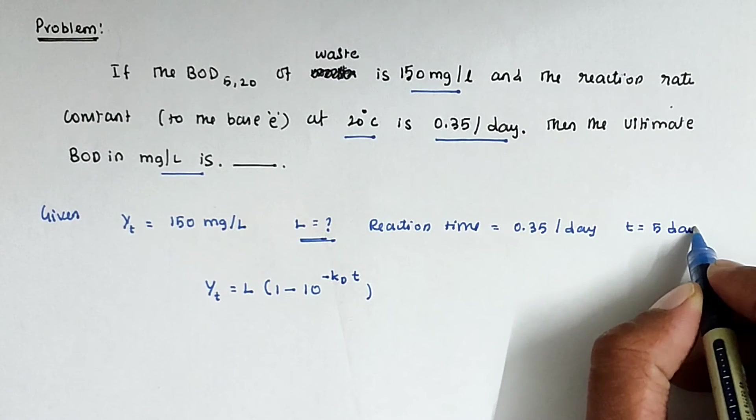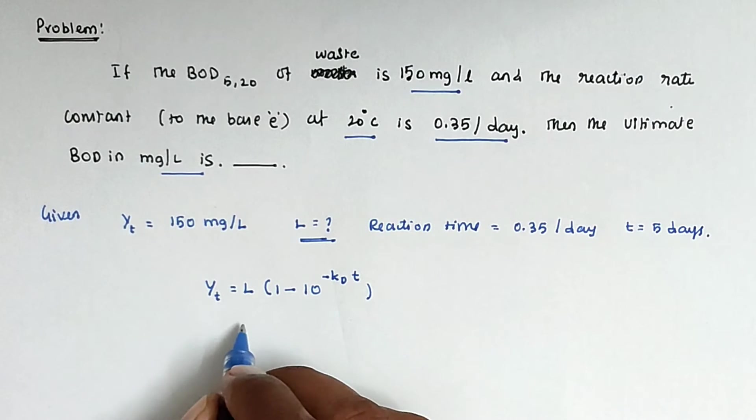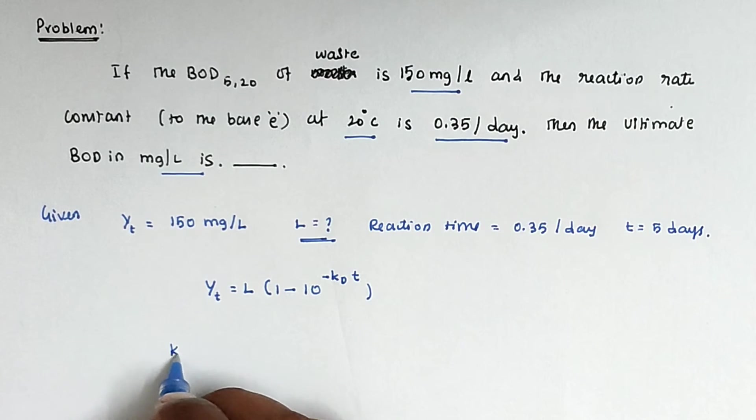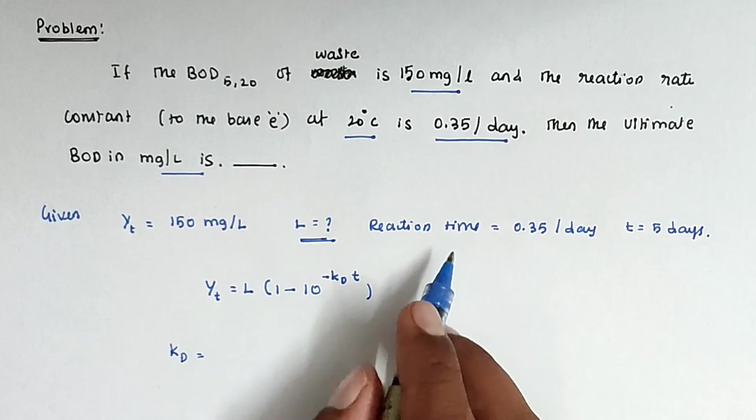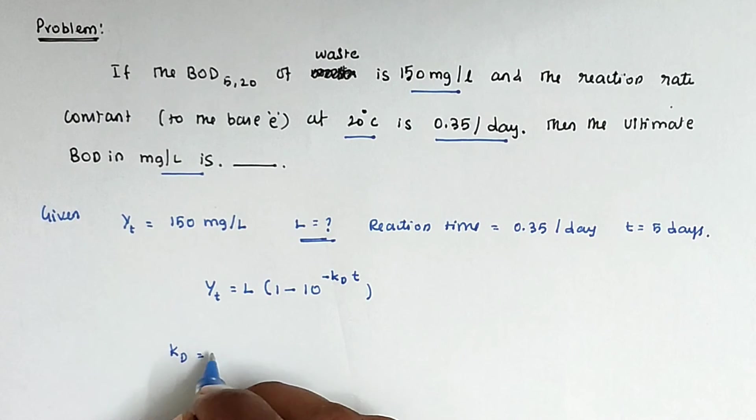Now we have to find out the K_D value. The K_D formula is the reaction time divided by 2.3. That is 0.35 divided by 2.3, so we get the value of 0.15 per day.